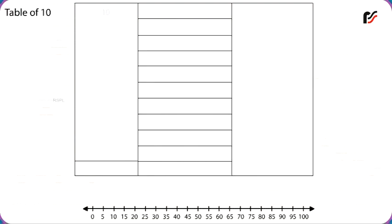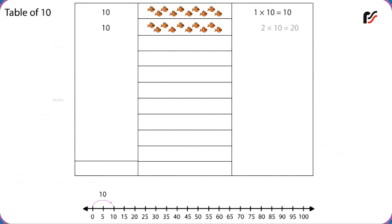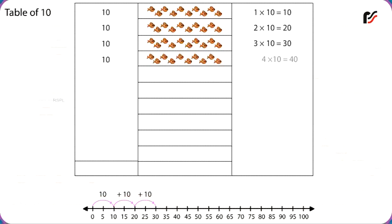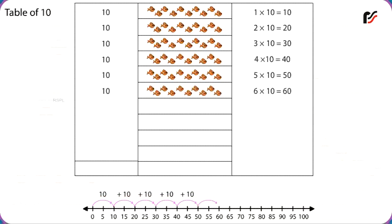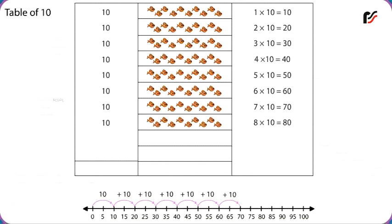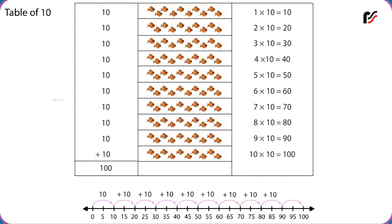Table of 10. 1 x 10 is equal to 10. 2 x 10 is equal to 20. 3 x 10 is equal to 30. 4 x 10 is equal to 40. 5 x 10 is equal to 50. 6 x 10 is equal to 60. 7 x 10 is equal to 70. 8 x 10 is equal to 80. 9 times 10 is equal to 90. 10 times 10 is equal to 100.